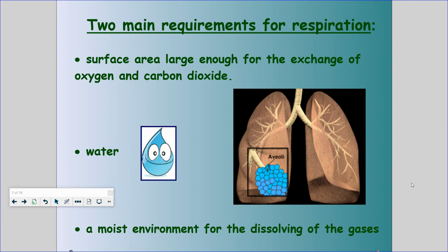In order for us to be able to diffuse things back and forth, we also need a moist environment for the dissolving of the gases — for oxygen and carbon dioxide to diffuse and travel within your bloodstream. Water and that moist environment become important for transferring gases between the alveoli and the bloodstream.